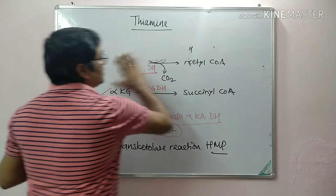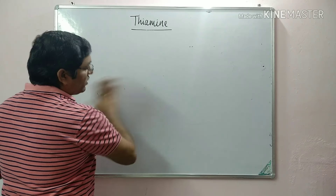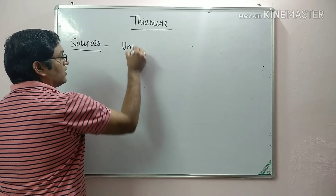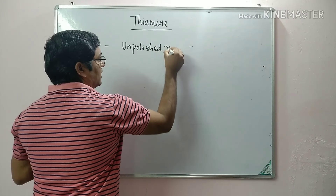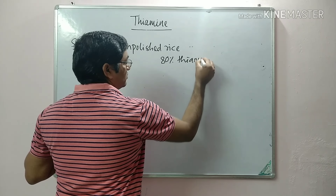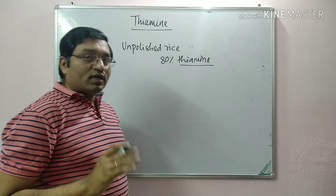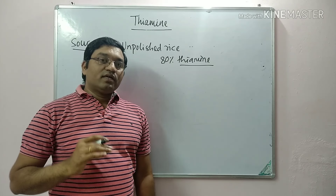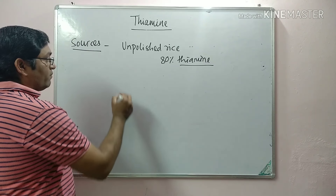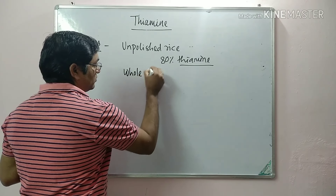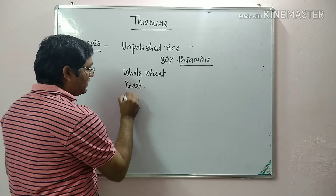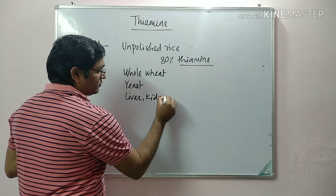Coming to the sources, the important dietary source of thiamine is unpolished rice. Polishing of rice removes approximately 80% of thiamine, as it is present in the outer aleurone layer. Thiamine is also present in whole wheat, whole grain, and yeast. In non-vegetarian sources, it is present in liver and kidney.